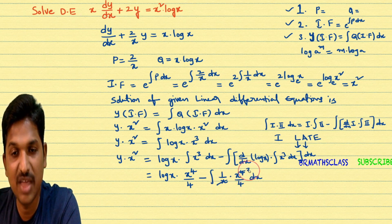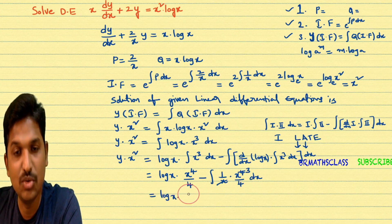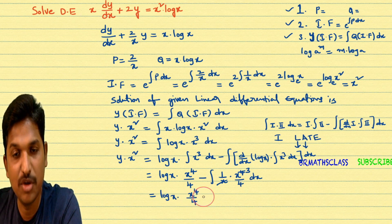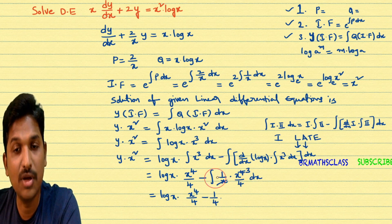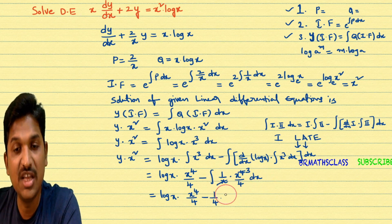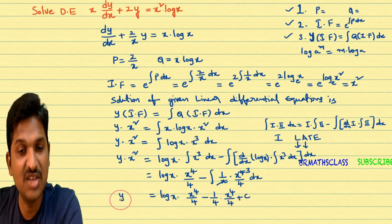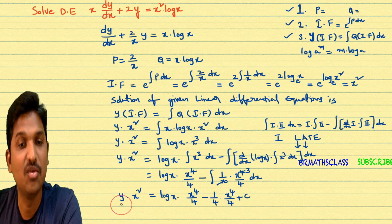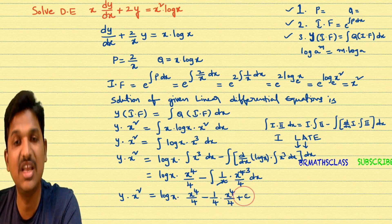Continuing the simplification: ∫x³ dx = x⁴/4. So the general solution for the given differential equation is y·x² = log x · (x⁴/4) − x⁴/16 + c, which simplifies to y·x² = (x⁴/4)·log x − x⁴/16 + c.